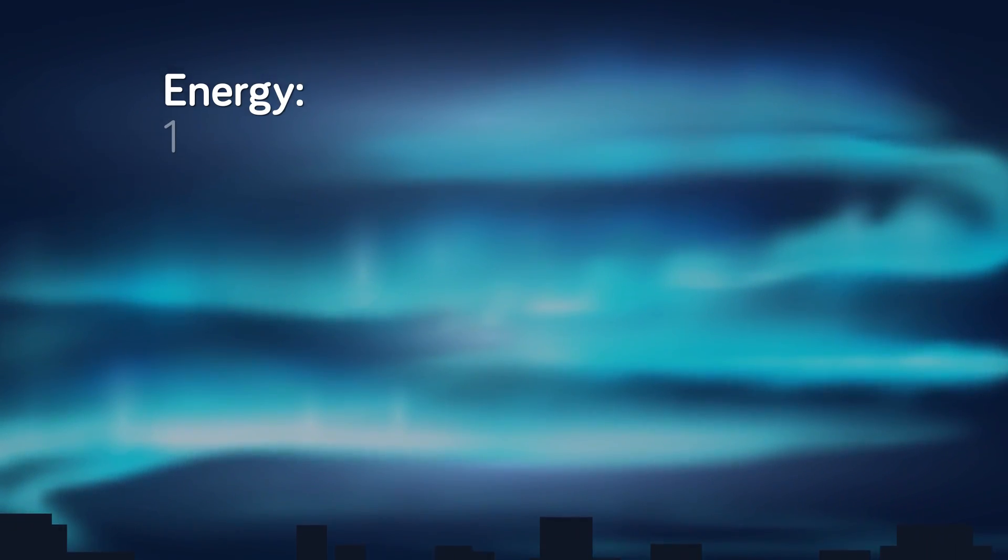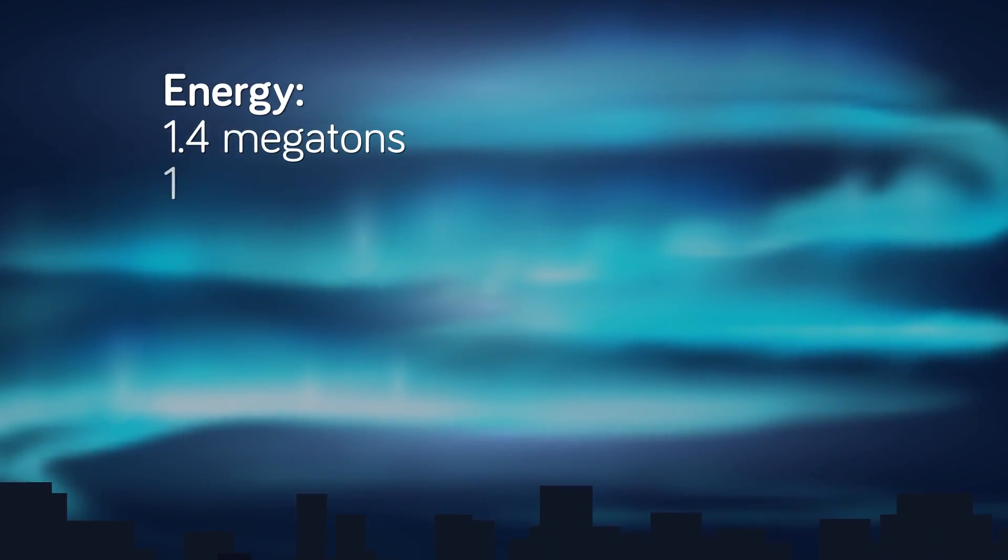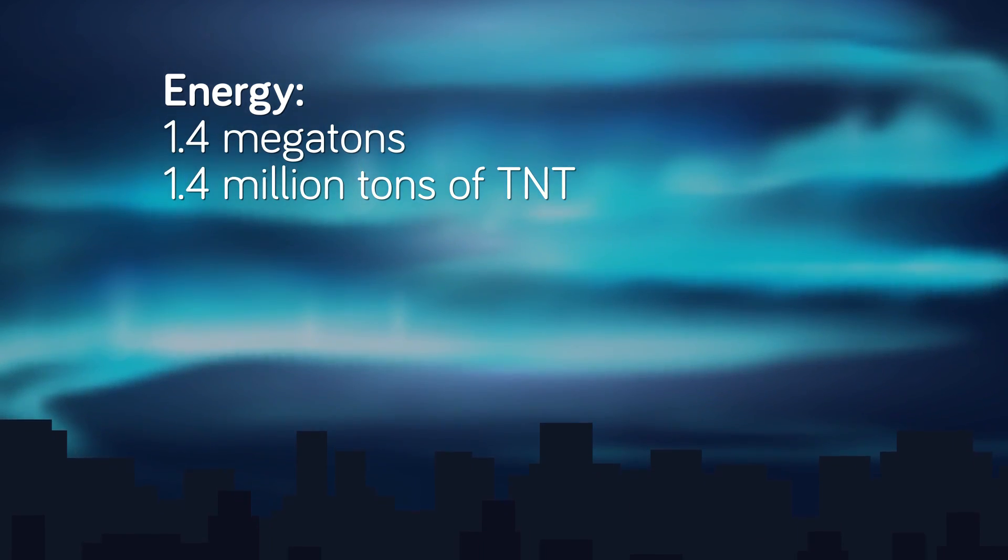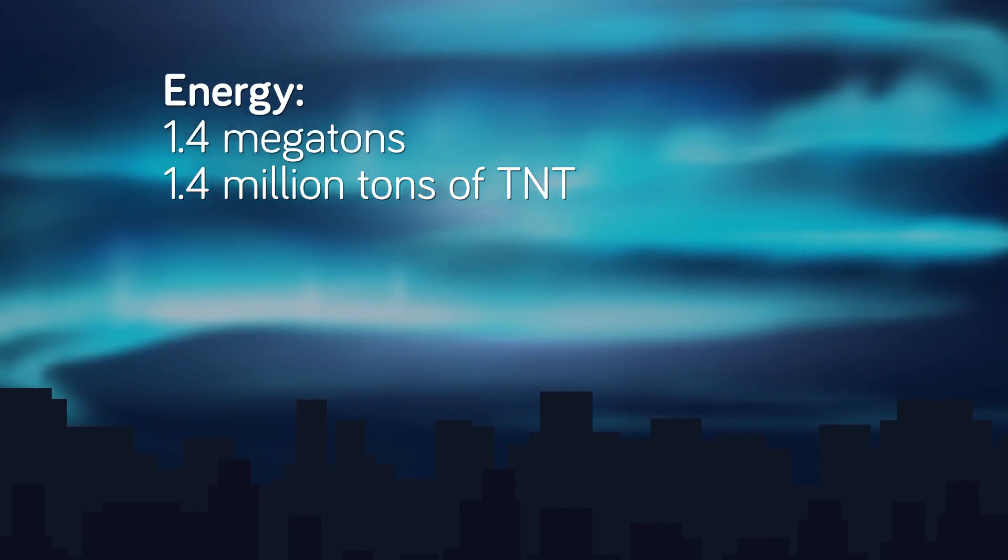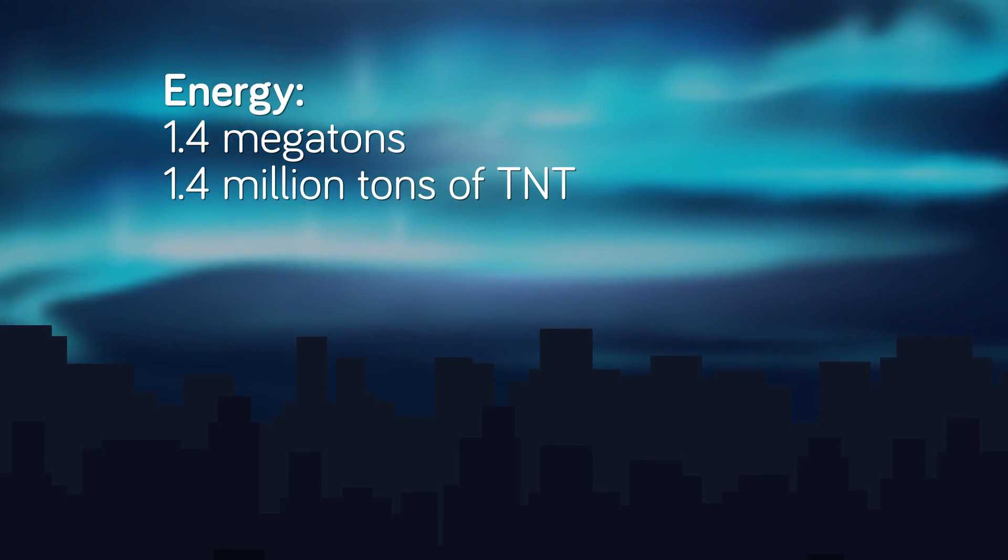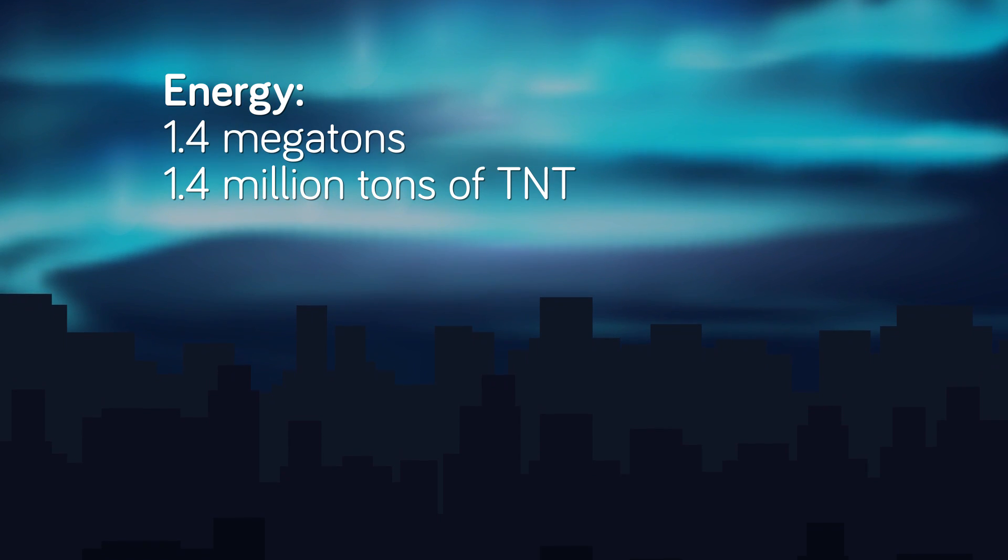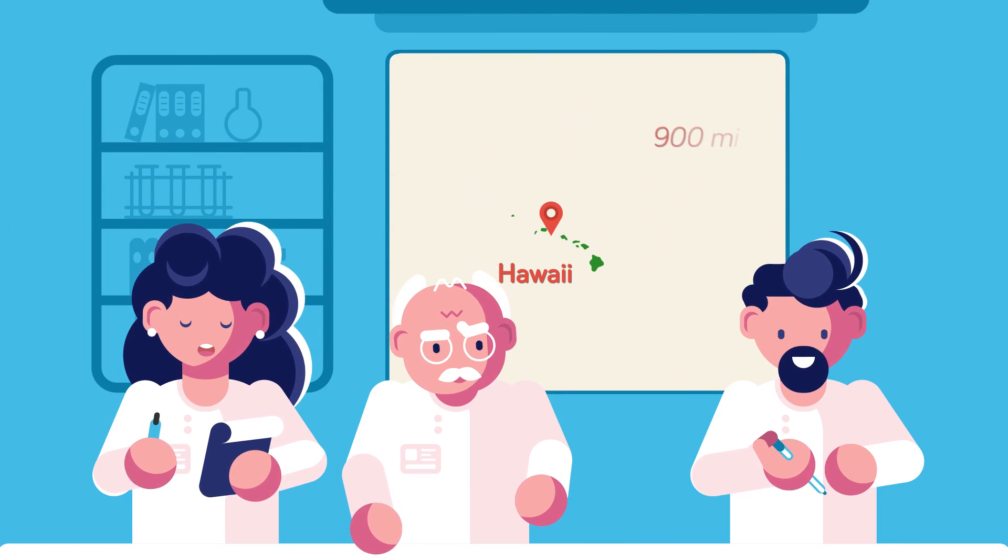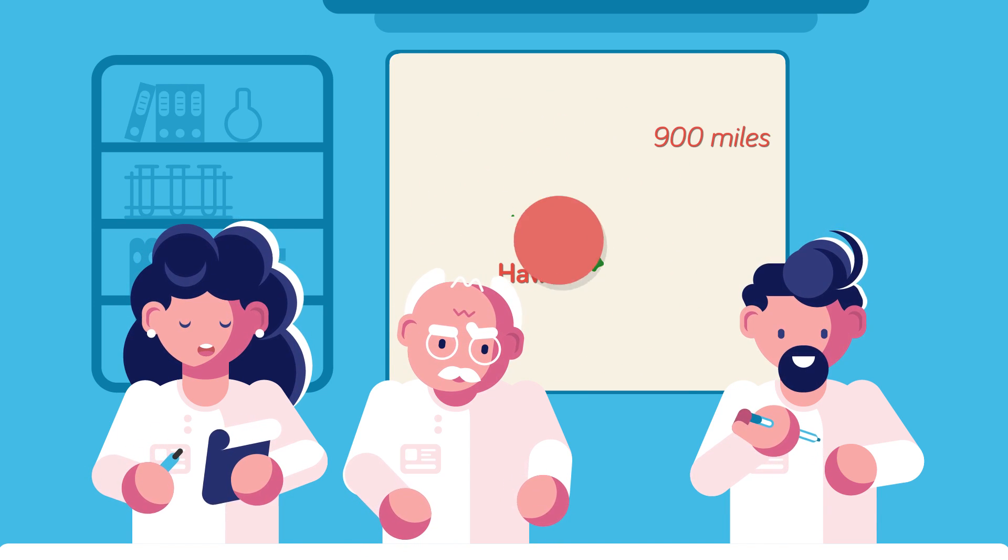The explosion released 1.4 megatons of energy. That means that the blast unleashed the energy equivalent of 1.4 million tons of TNT. Because it took place in space, this massive energy burst was strangely soundless. It caused a spherical blast that created an aurora for over a thousand miles in almost every direction. The effects of the exploding nuke were much larger and emerged much further away than US scientists had ever anticipated.